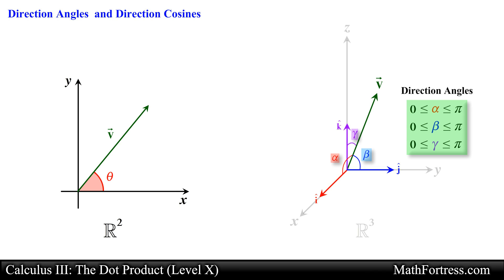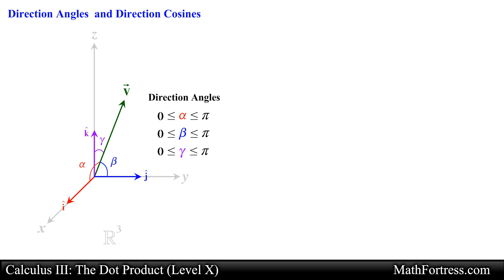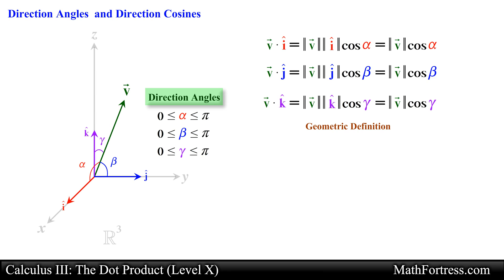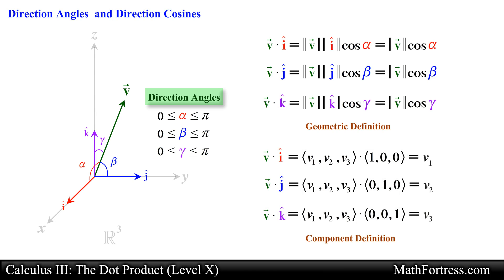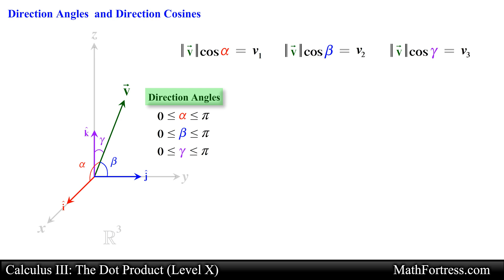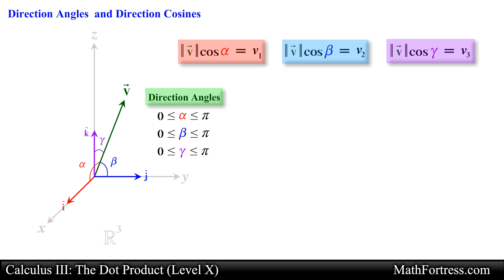Notice that the direction angles will have values between 0 and pi inclusive. This is the same interval we use for the dot product. To find an expression for the direction angles, we simply take vector v and dot it with i hat, j hat, and k hat. Using the geometric definition of the dot product we obtain the following expressions, and by using the component definition of the dot product we obtain the following expressions. Equating the results from the geometric and component definition we obtain the following.